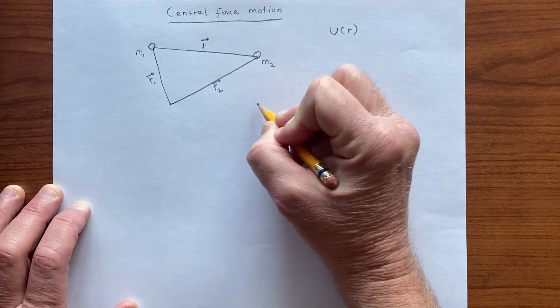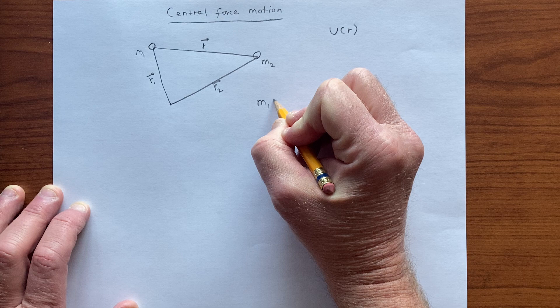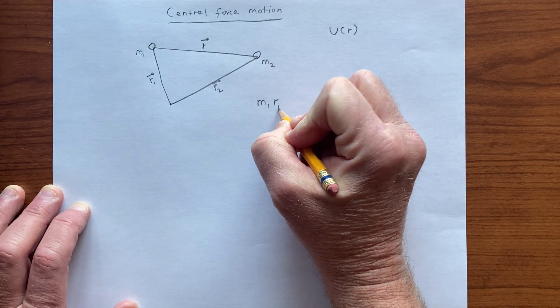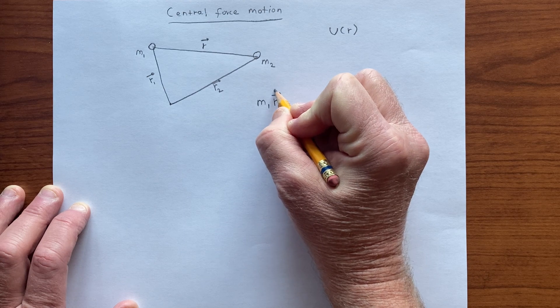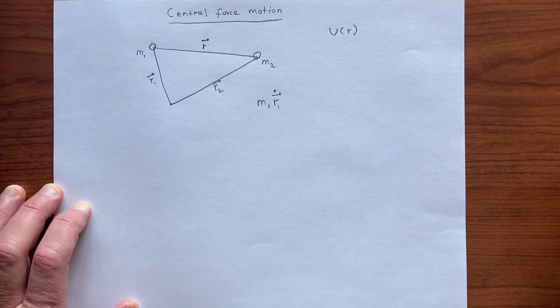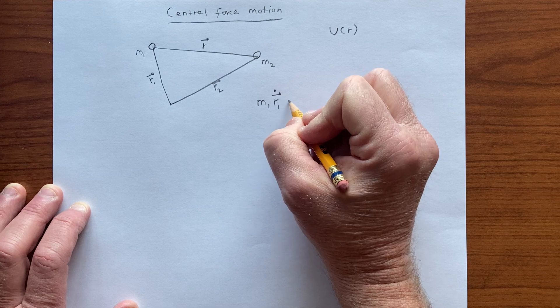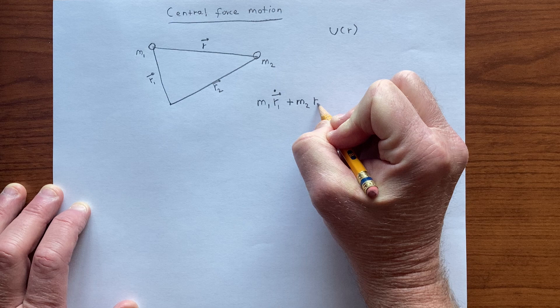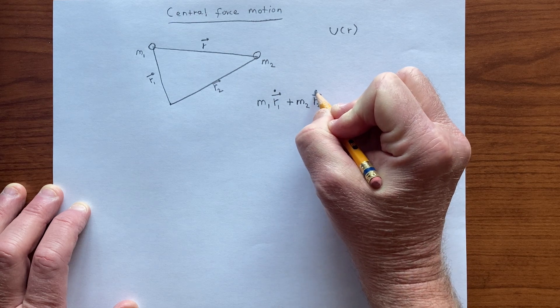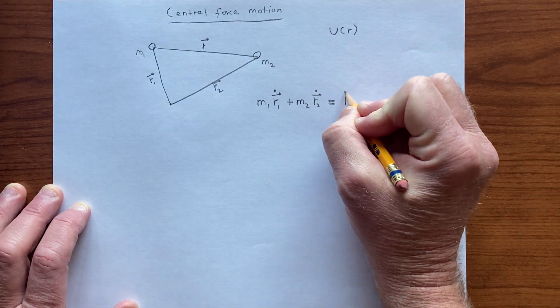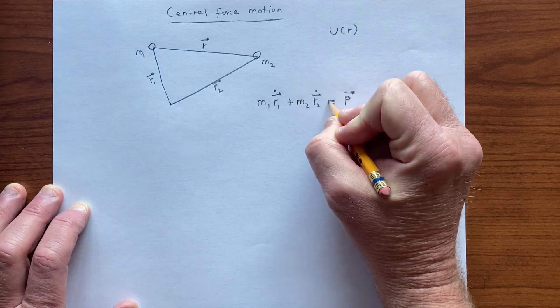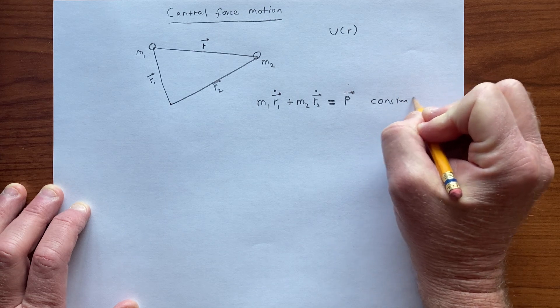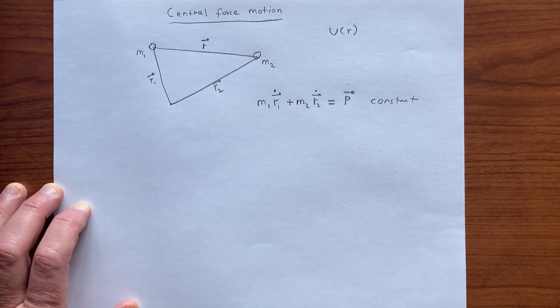So we have m1 times the velocity of this one, which is r1 dot, the time derivative, its mass times velocity, plus the same for the other one, which is m2 times r2 dot. That's the momentum p of the system, and that is a constant. That's not changing with time.